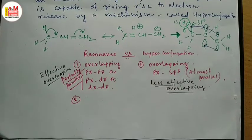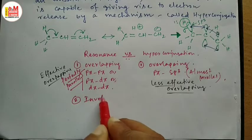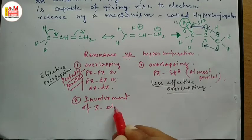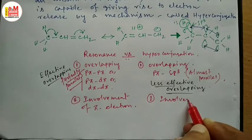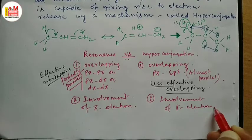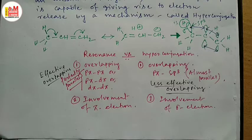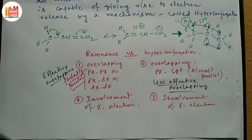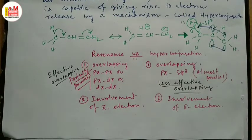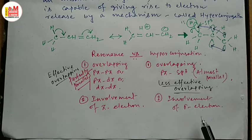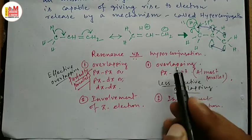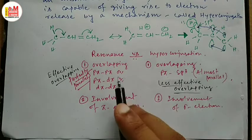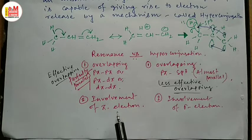Point number two: in resonance, it is easier to break a pi bond instead of a sigma bond. So the involvement of pi electrons will be very easy compared to the involvement of sigma electrons. That's why the overlapping or conjugation in case of resonance is very much stronger than the overlapping in hyperconjugation, which makes resonance a more powerful effect over hyperconjugation.